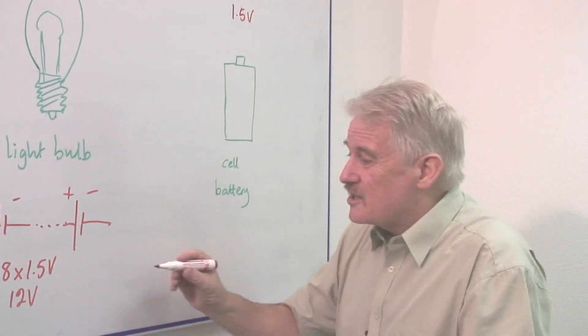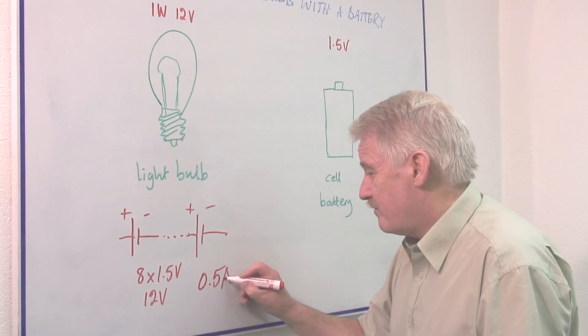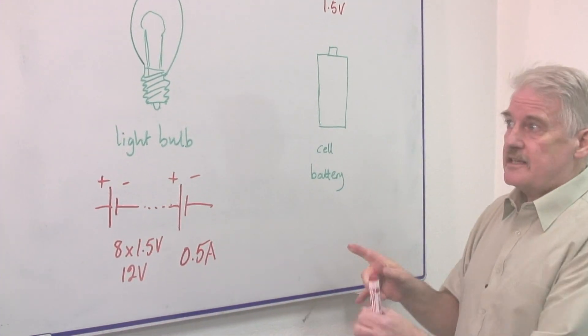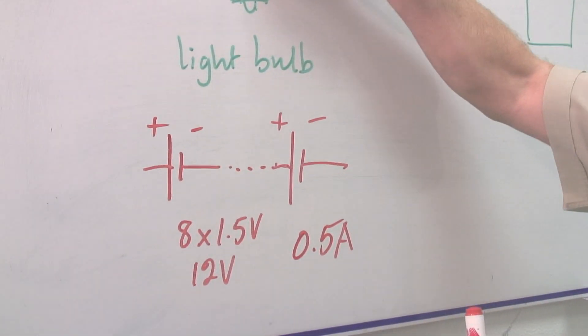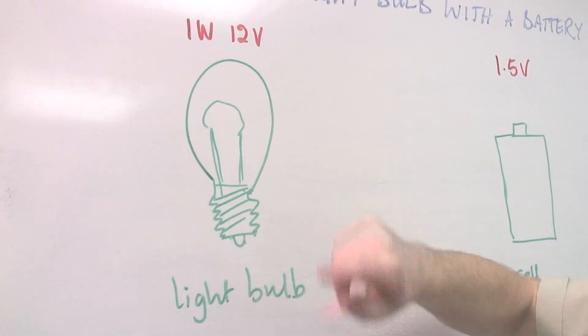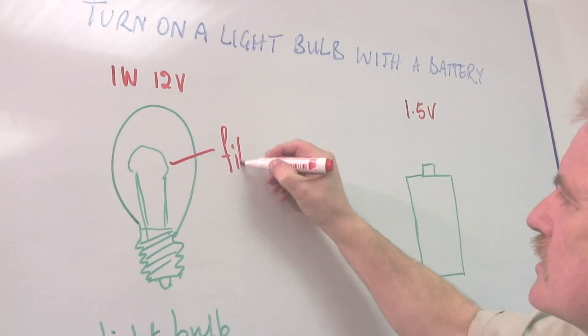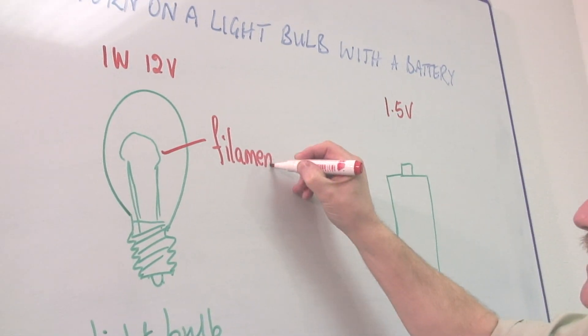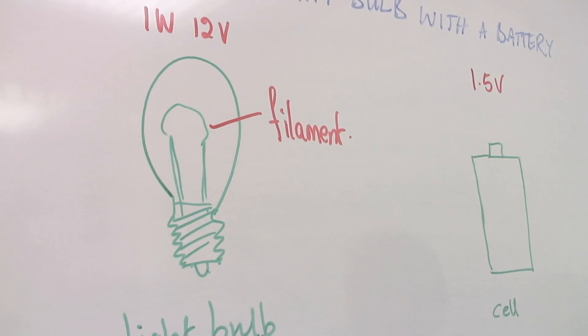In fact, it's going to be a maximum of half an amp. And this is because the current depends on how much resistance this has. So how much resistance, this is called the filament. How much resistance the filament has. And if the filament has a low resistance, you're going to get a high current.